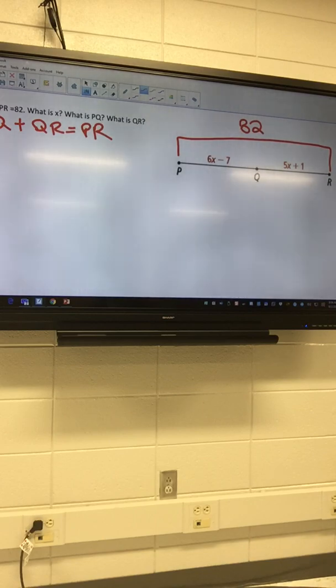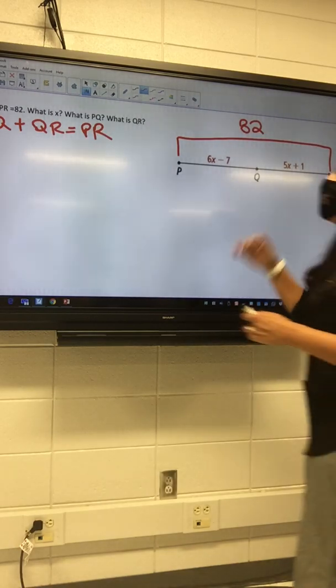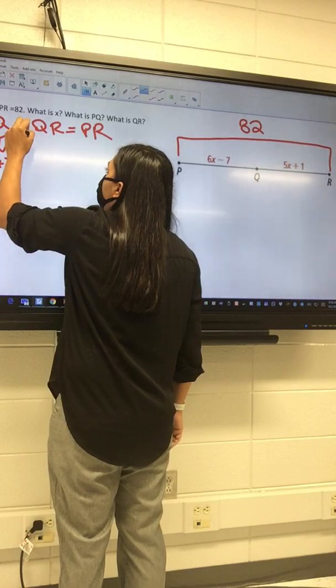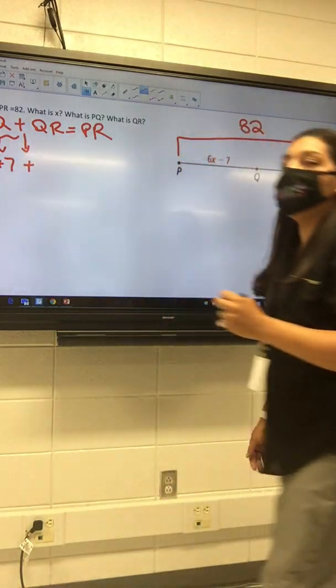You really have to understand that in order to be successful. Remember, this worksheet was the one that you guys are struggling on. So what is PQ? Brie, what's PQ? 6x minus 7. So we can plug that in, 6x minus 7. And then I got a plus sign. Mario, what's QR? 5x plus 1.